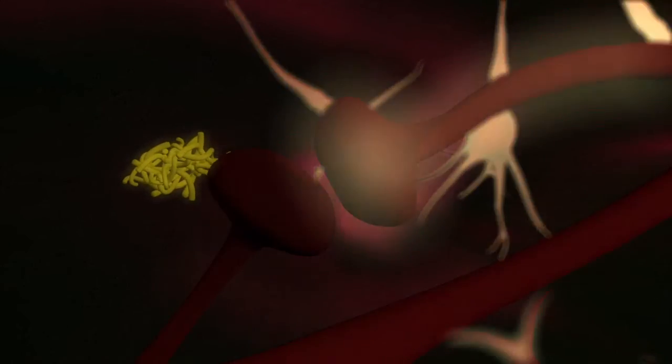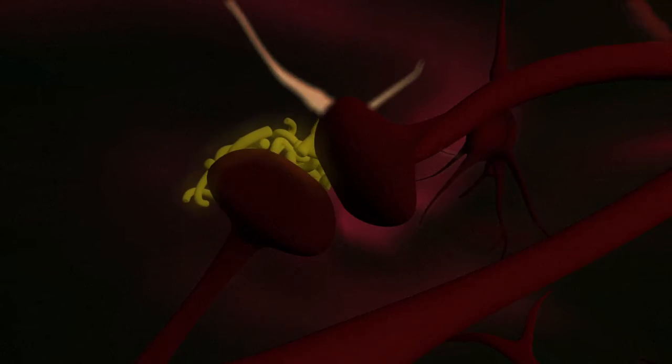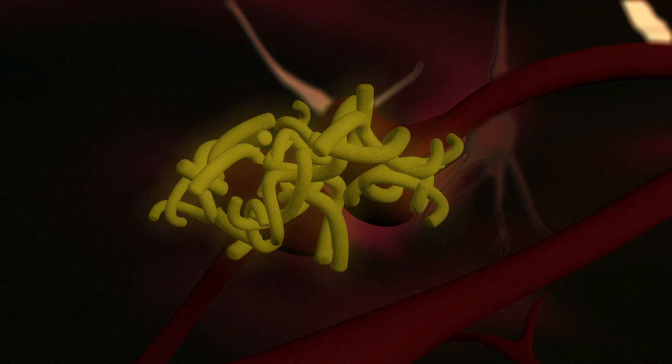This is because tau proteins can no longer travel across synapses, carrying signals to other brain cells. A second type of abnormal structure is created by the accumulation of beta-amyloid plaques. These form when proteins in brain cells are processed differently, once again blocking communication channels.